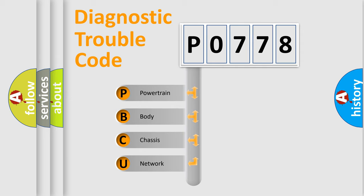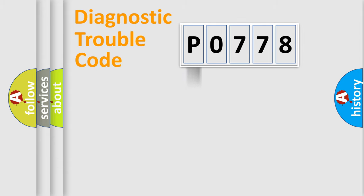We divide the electric system of automobile into four basic units: Powertrain, Body, Chassis, and Network. This distribution is defined in the first character code.